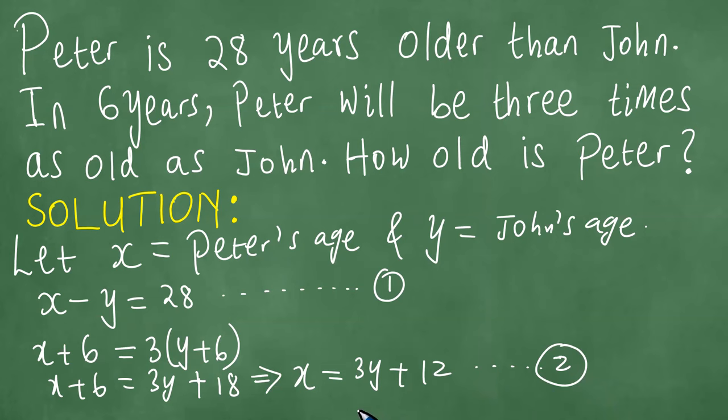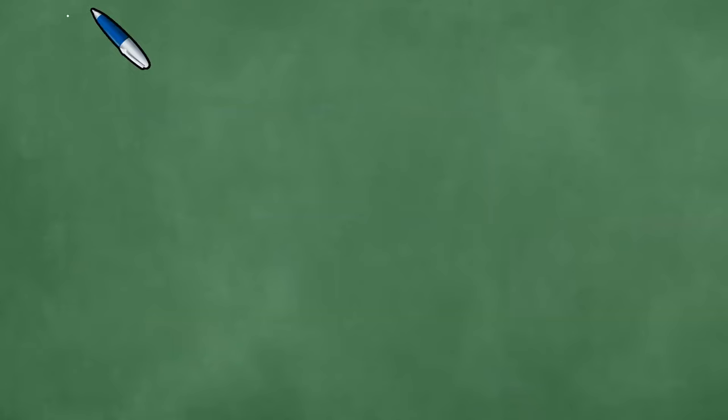We have these two equations. x minus y equals 28, equation 1. And we have also this other equation x equals 3y plus 12, equation 2.